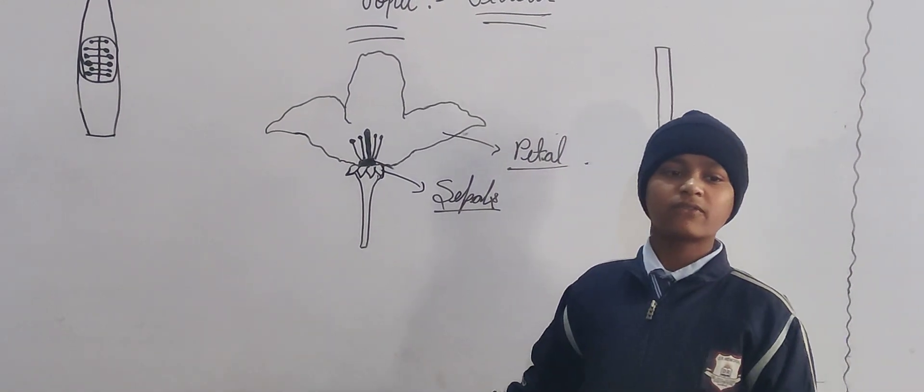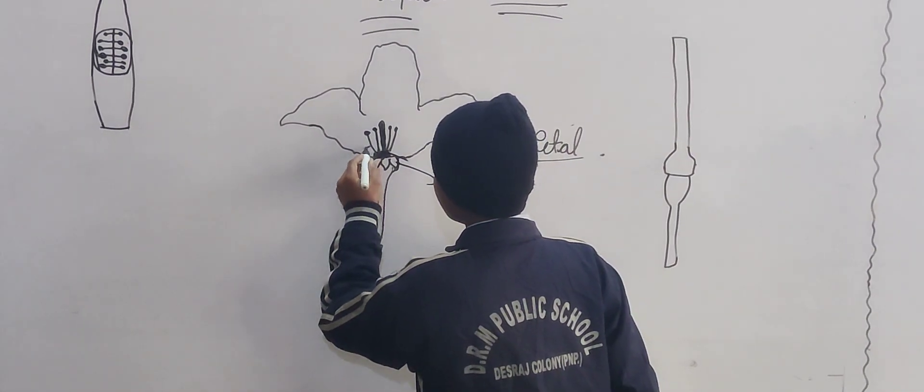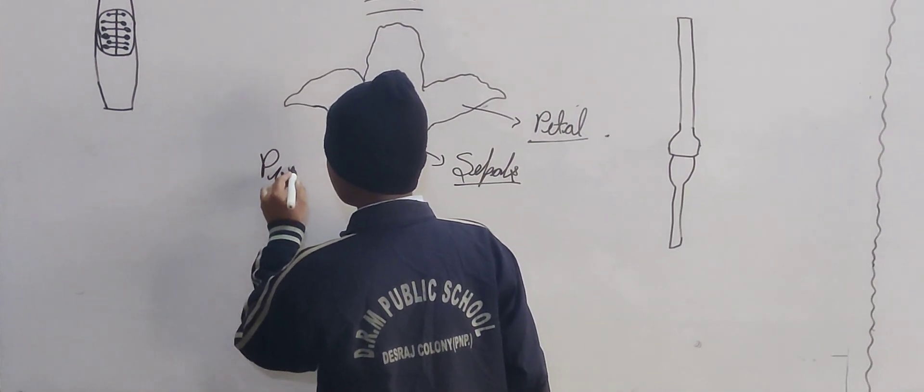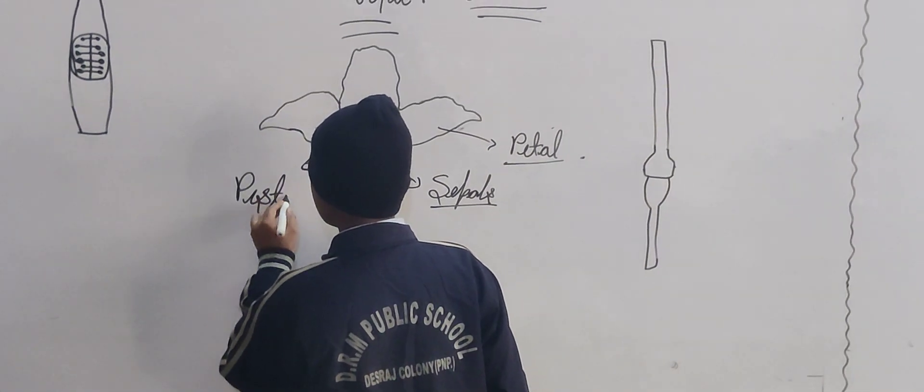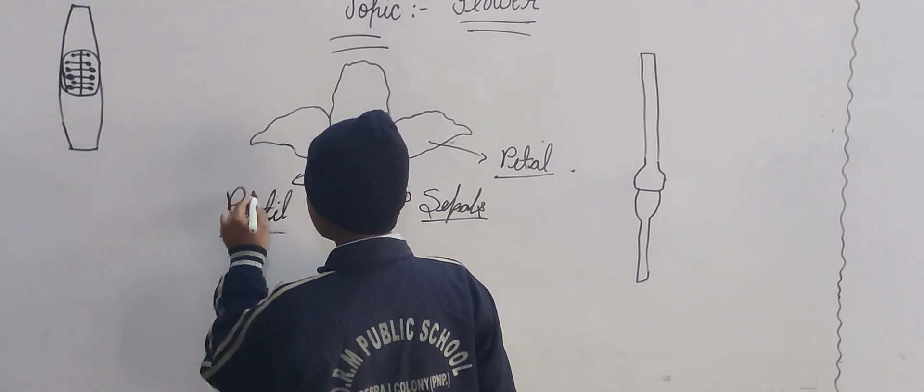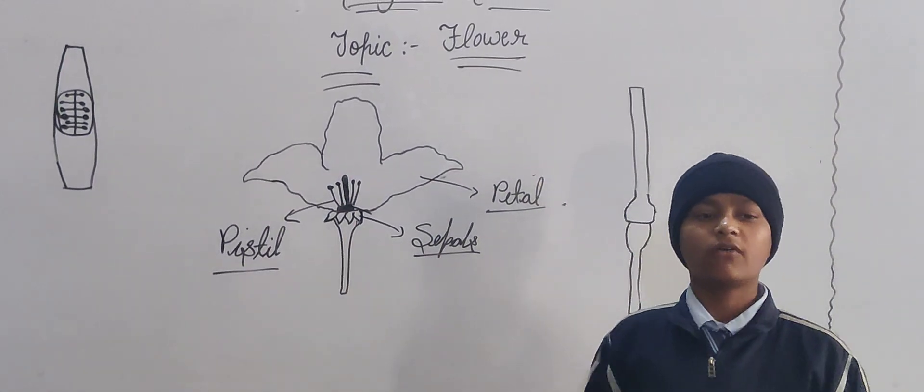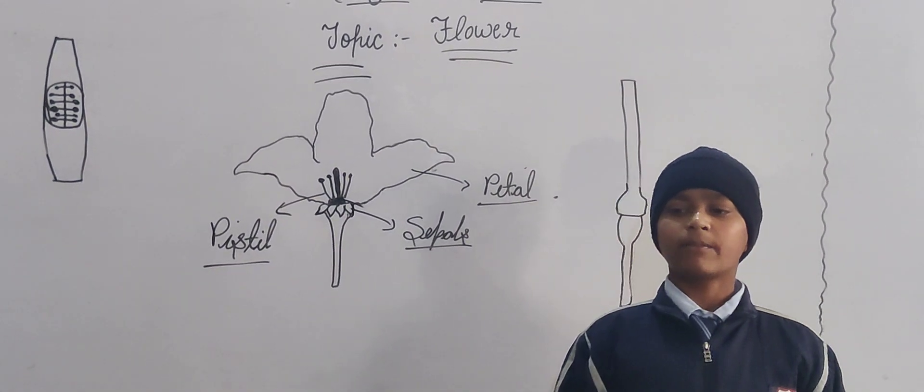Next part of the flower is pistil. The innermost part of the flower are called pistil.